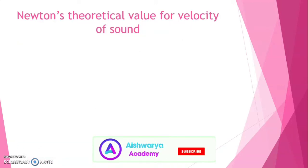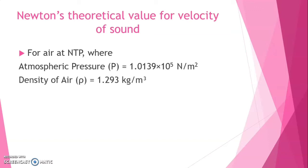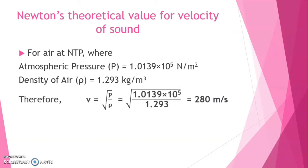Let us calculate the theoretical value for velocity of sound using Newton's formula. For air at NTP where atmospheric pressure P equals 1.0139 into 10 power 5 Newton per meter square and density of air rho equals 1.293 kg per meter cube. Therefore, velocity V equals root over P by rho, that is, root over 1.0139 into 10 power 5 divided by 1.293. Simplifying this, we get velocity equals 280 meter per second.